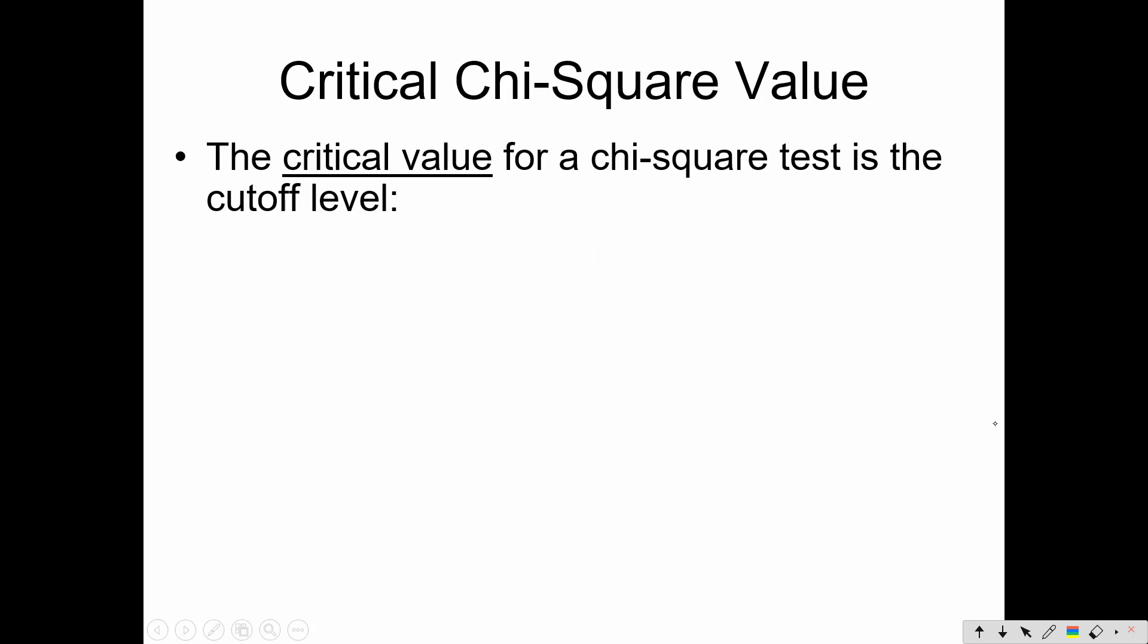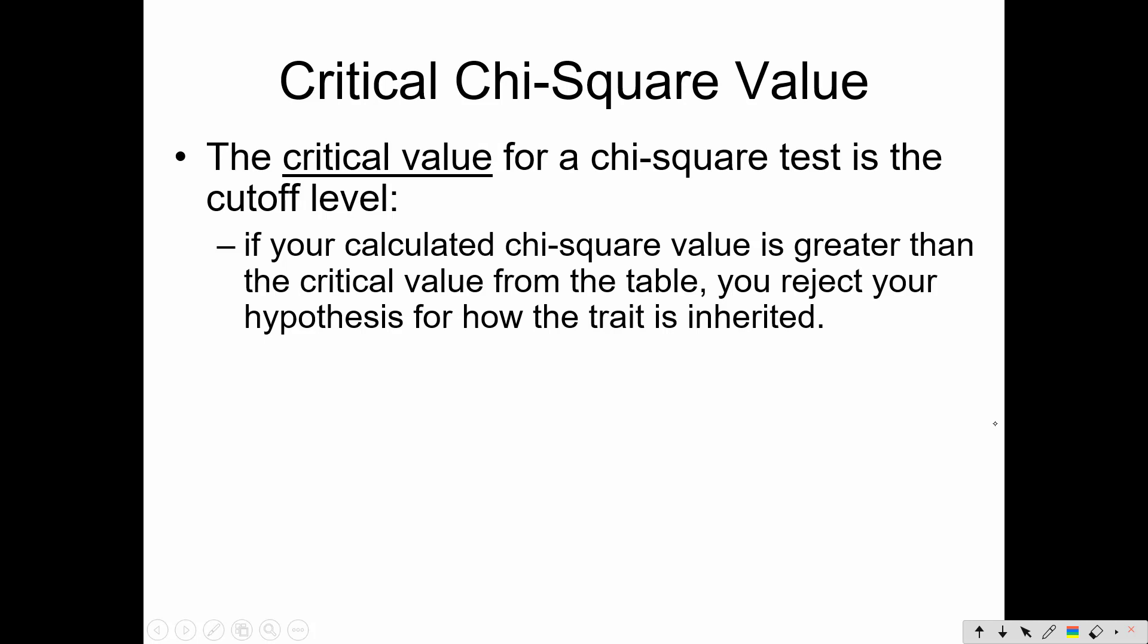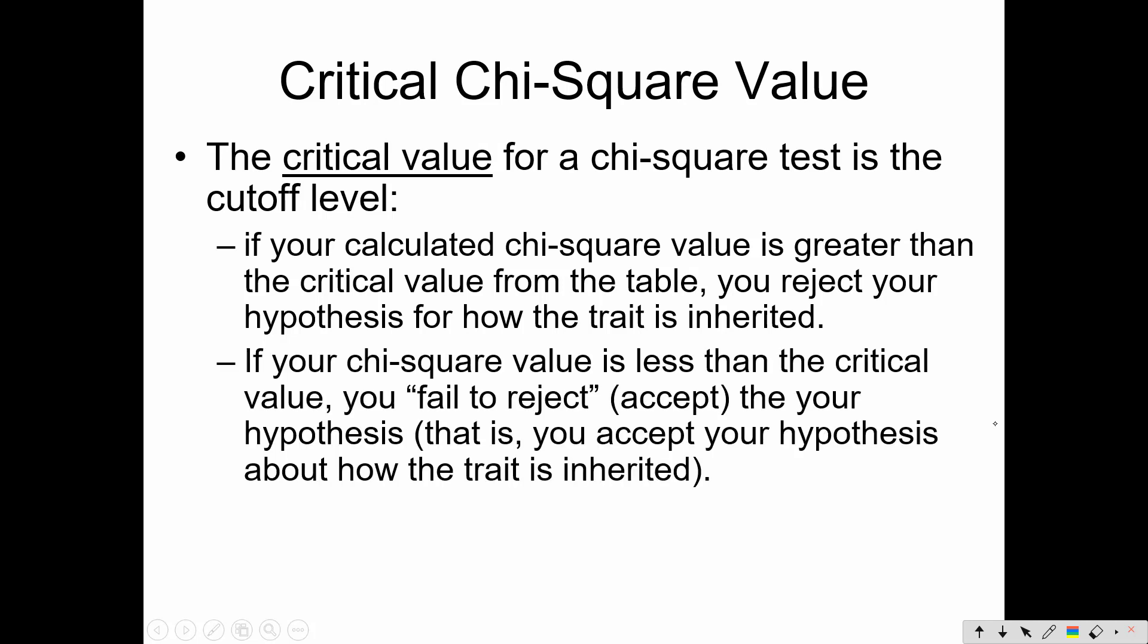Now, the critical value in a chi-square test is the value at which you say, okay, beyond that number, I'm going to have to reject my hypothesis. I just don't have confidence in it. But if the number is less than that critical value, you can fail to reject your hypothesis, or in other words, accept it, believe that your hypothesis could be correct. If your calculated chi-square value is greater than the critical value from a table, then you reject your hypothesis for how the trait is inherited. But if your chi-square number is less than the critical value, you fail to reject, or in other words, accept your hypothesis for how your trait is inherited.